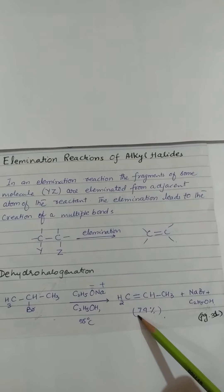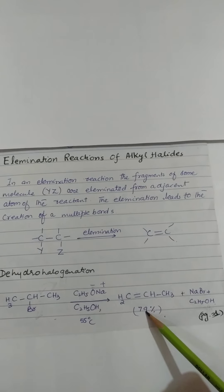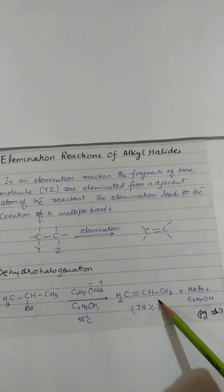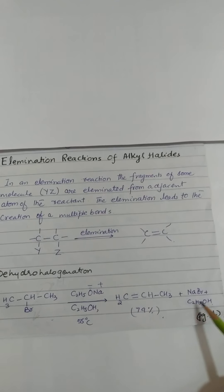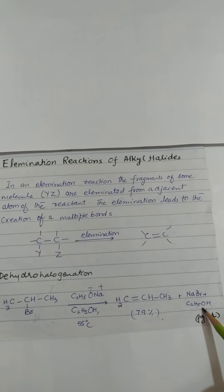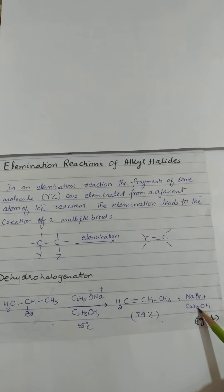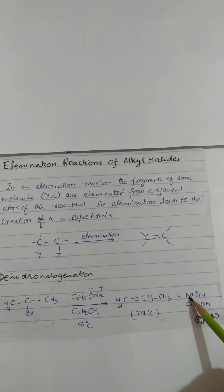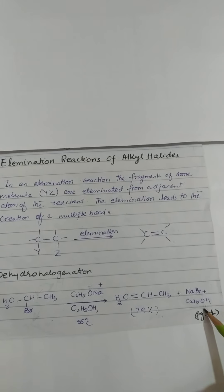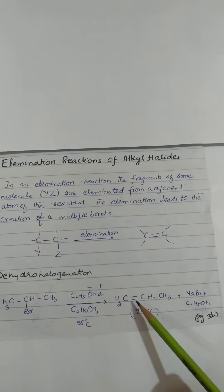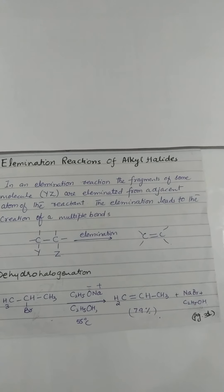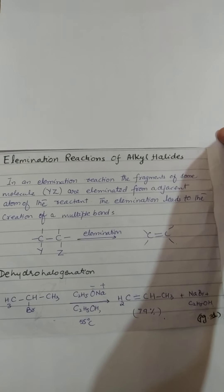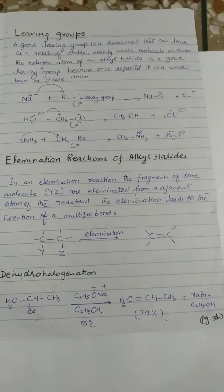اس کے بعد 79% yield میں product حاصل ہوگی، alkene form ہوگی، اور ethanol ملے گا اور sodium bromide۔ یہ side products ہیں جبکہ ہمارے پاس یہ alkene form ہو جائے گا۔